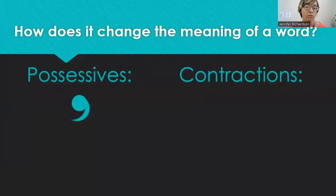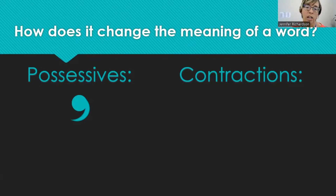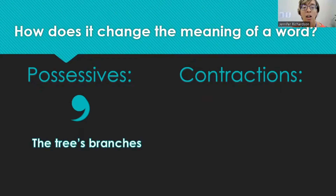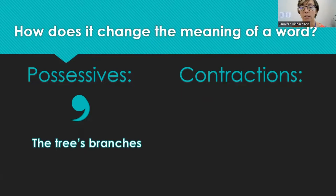So the difference is this tiny little apostrophe. How can one little apostrophe change the meaning of a word? Let's give some examples. The little apostrophe you see here on the left indicates a possessive. Here's an example: the tree's branches. The tree owns the branches — the branches belong to a tree. That shows possession.